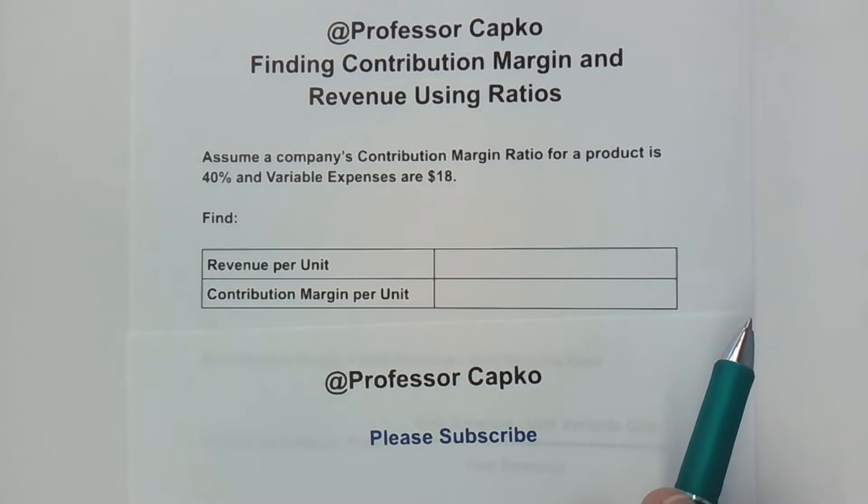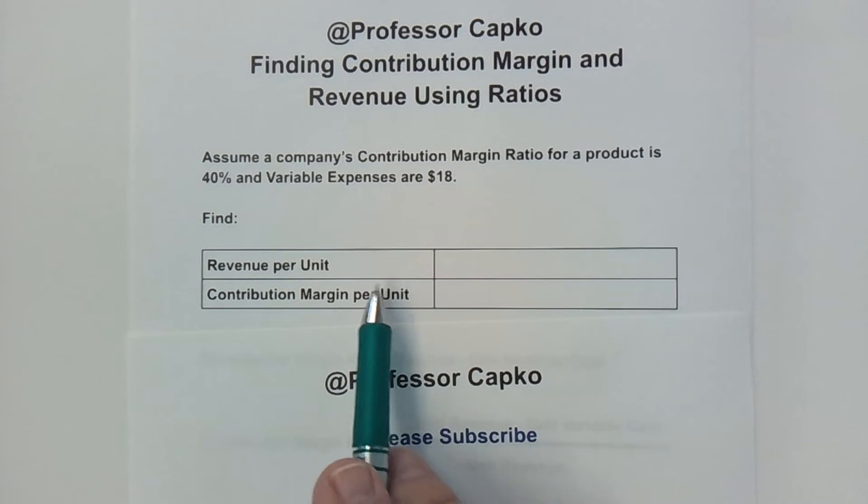Have you been asked to find the revenue per unit and the contribution margin per unit given only the contribution margin ratio and the variable expenses, and you're not quite sure how to find it?